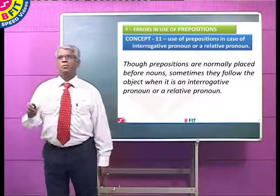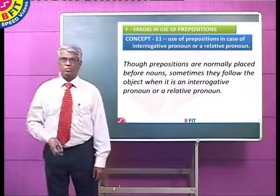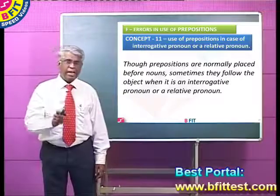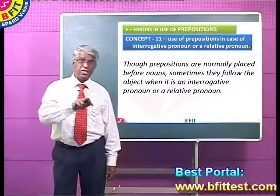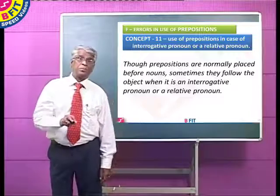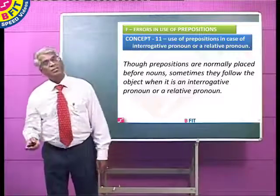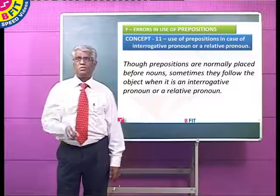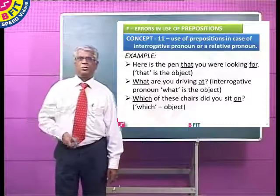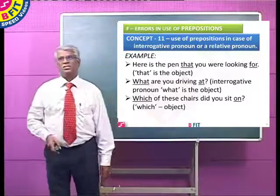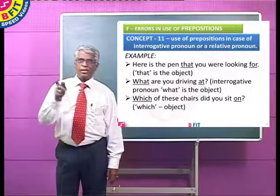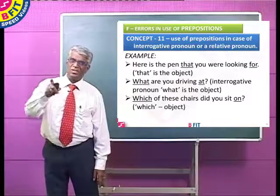There are occasions when prepositions come later, not before the noun. Though prepositions normally occur before nouns, they follow the object when it is an interrogative pronoun or a relative pronoun. For example: here is the pen that you were looking for — here 'for' comes later because 'that' is the object.